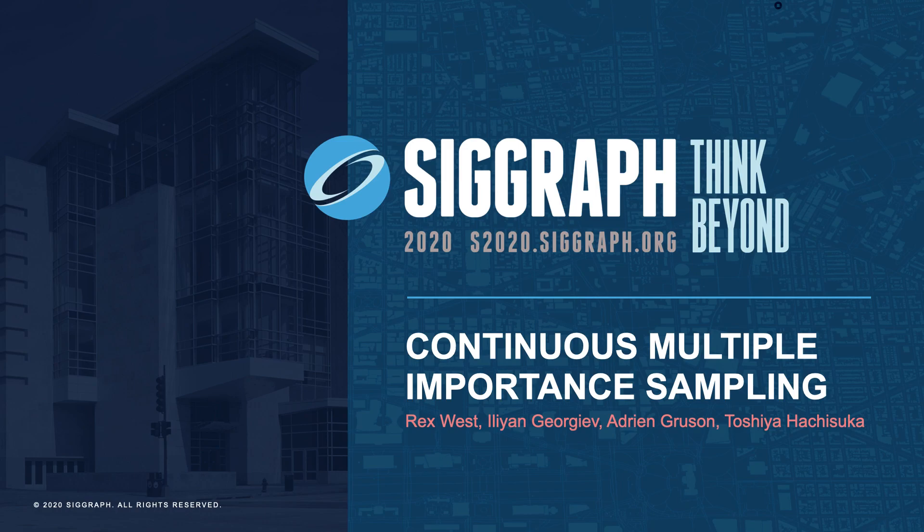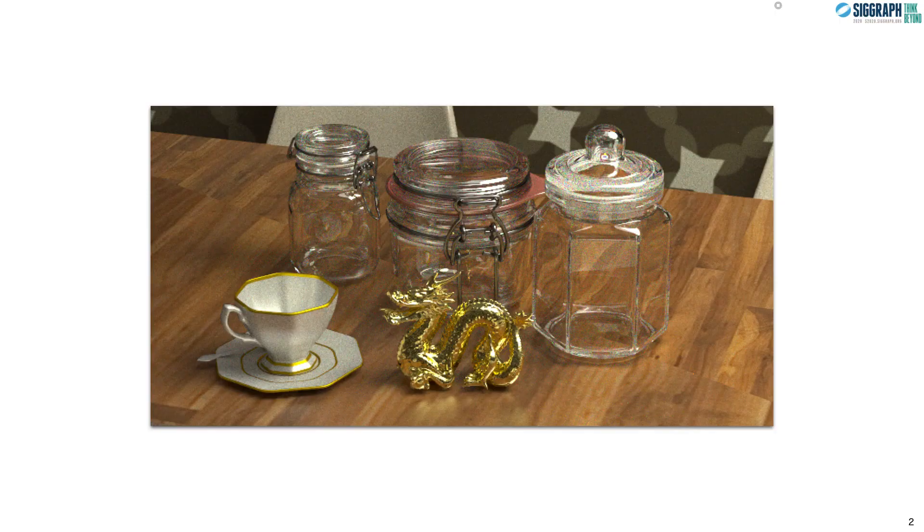My name is Rex West, and I'm going to talk a little bit about continuous multiple importance sampling. In rendering, we are trying to generate photorealistic images like these.